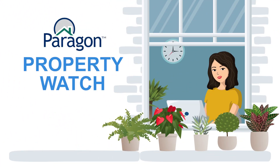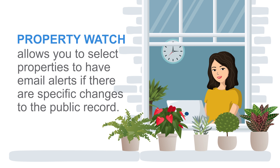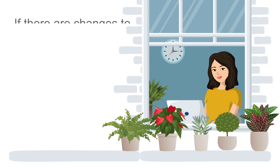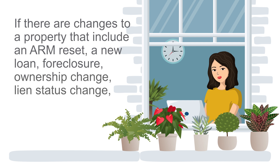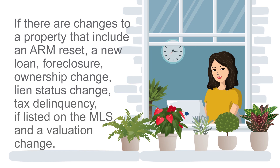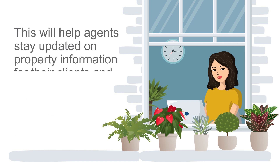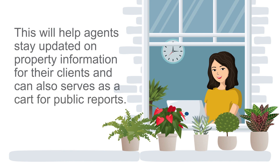In this video, we will cover a Paragon feature that will allow you to select properties to have email alerts if there are specific changes to the public record. If there are changes to the property that include an ARM reset, a new loan, foreclosure, ownership change, lien status change, tax delinquency, if listed on the MLS, and a valuation change. This will help agents stay updated on property information for their clients and can also serve as a cart for public records.